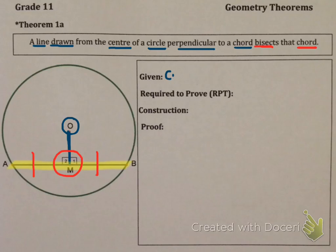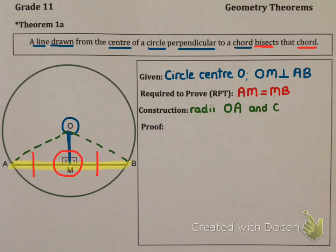Let's start with given. You are given a circle with center O and you are given that OM is perpendicular to AB. What are you required to prove? You are required to prove that AB is bisected, which means specifically that AM equals MB. The construction you need to do is draw in OA and OB, and they are both radii. You draw them in and write this under construction.